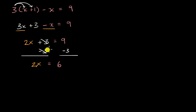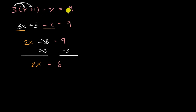If two x is equal to six, then we know that three times x plus one minus x is equal to nine. And if this top equation is true, then we also know that this last equation is true.